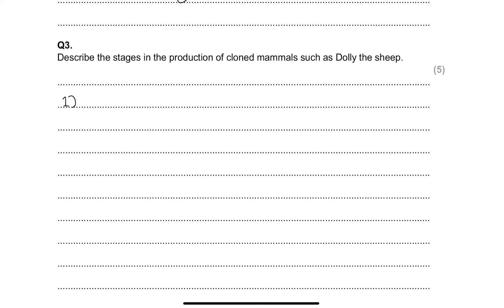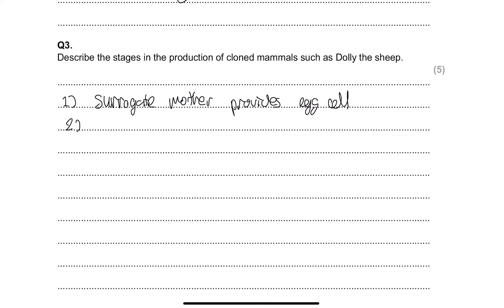Step one: acquire an egg cell. This egg cell comes from the first person we need to know — the surrogate mother. The surrogate mother provides the egg cell. What's special here is we're not fertilizing this egg cell to produce an offspring — that would just be regular fertilization. We're making a clone. So what we do is enucleate the egg cell.